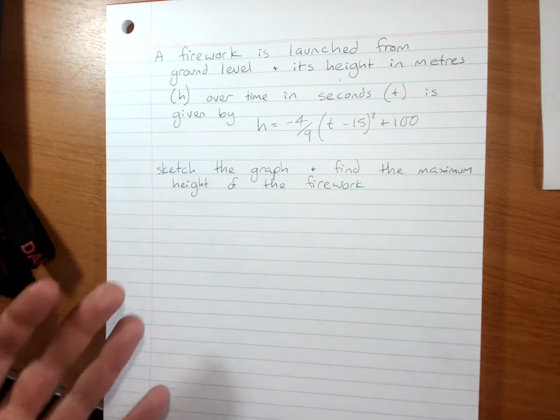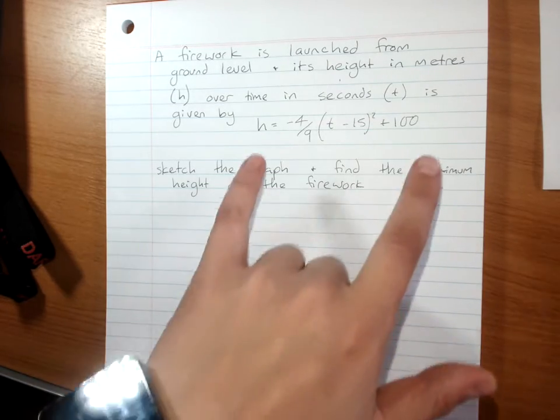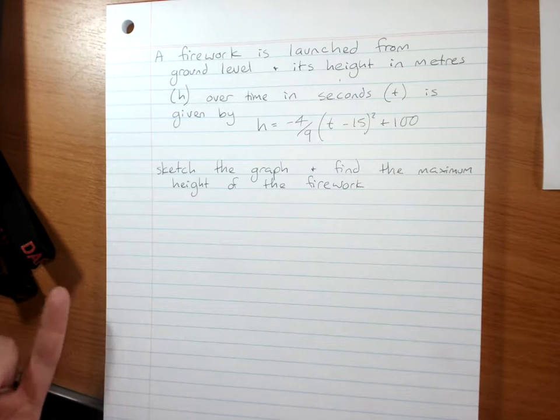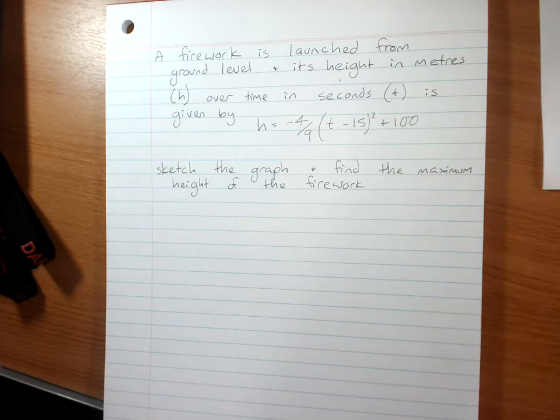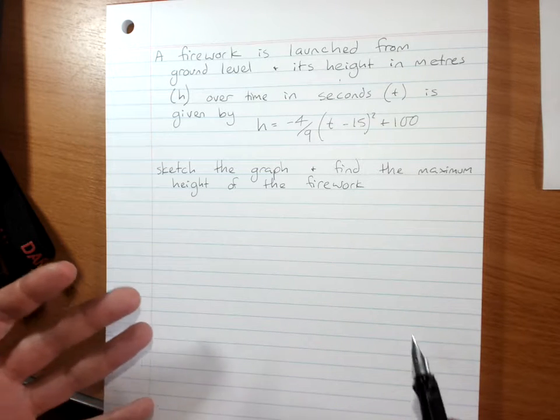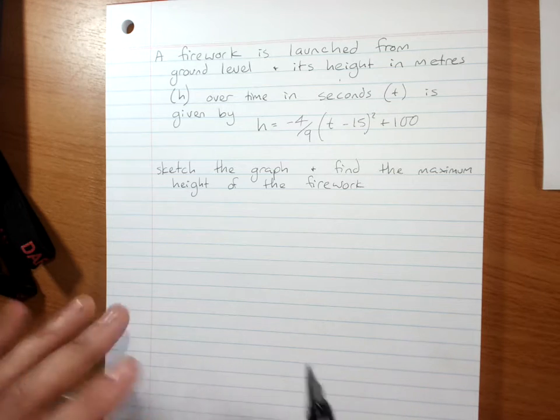This is a really typical type of question that we're likely to get. It will vary as to whether they give you the parabola in general form or in turning point form. But your strategy is the same either way. You find the turning point, you find the intercepts, you look at where the meaningful part of the parabola is and only sketch that part.